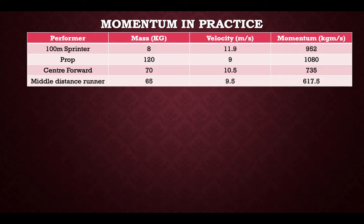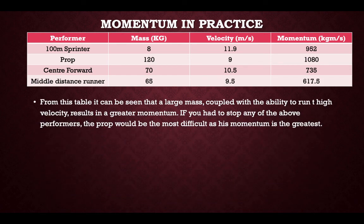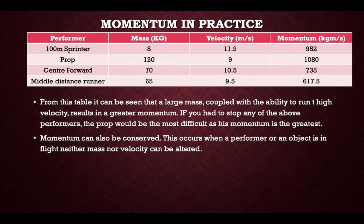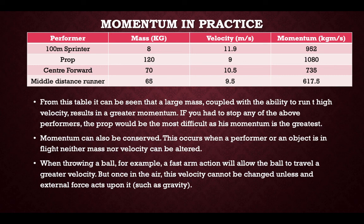Momentum in practice: a 100 metre sprinter with a mass of 80 kilos and a velocity of 11.9 metres per second gives a momentum of 952 kilograms metres per second. From the table, a large mass combined with high velocity results in greater momentum — a rugby prop would be the most difficult to stop as his momentum is the greatest. Momentum can also be conserved — this occurs when a performer is in flight and neither mass nor velocity can be altered.